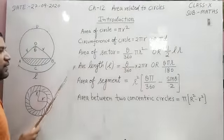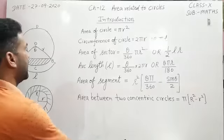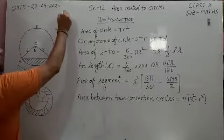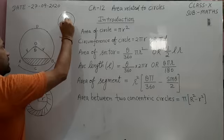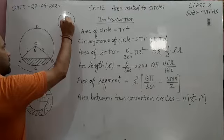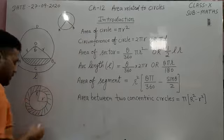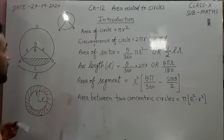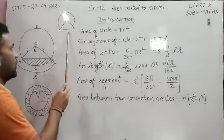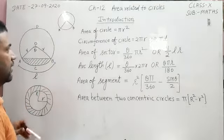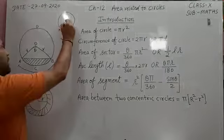And area of sector - first you have to know what is sector. If this is a circle and these are two radii OA and OB, then area enclosed between two radii and arc of circle is called sector. The angle between these two radii is theta, and the arc length AB is l.